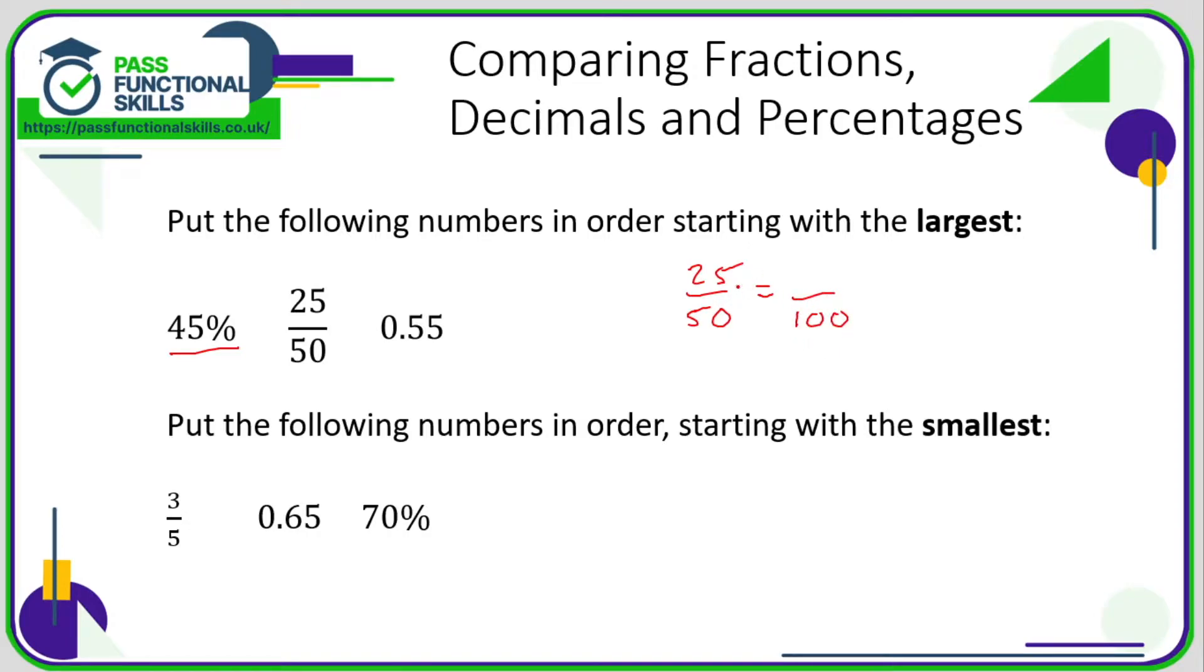Remember that percent means out of 100, and a percentage is an equivalent fraction which is out of 100. So 25 out of 50 is the same as what out of 100? Well, the number on the bottom has been doubled, so for an equivalent fraction we need to multiply the number on the top by 2 as well. And 25 times 2 is 50.